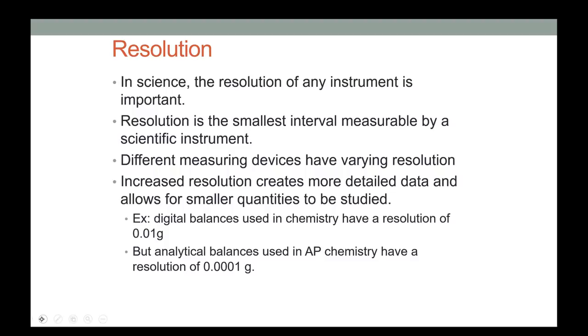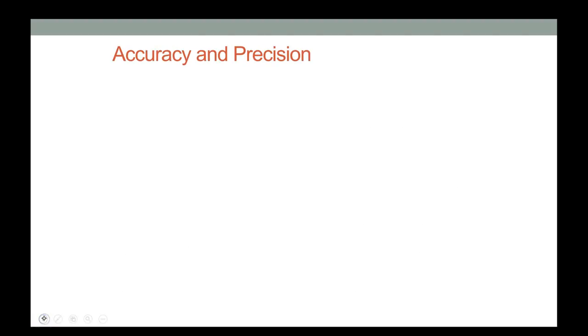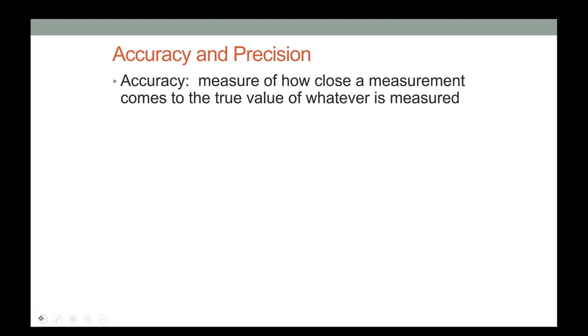The balances in AP chemistry cost about $1,200; the ones in regular chemistry cost about $250, just to give you an idea of how resolution affects cost. Resolution also tells us about significant figures — we'll get to that later.